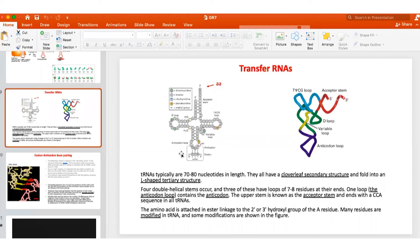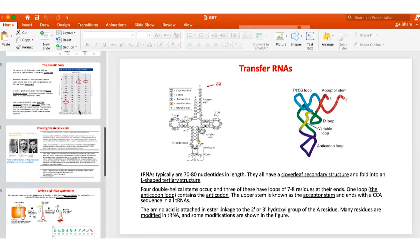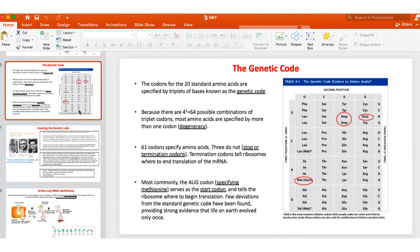A student asks to explain the wobble position and why the third codon is called wobble. The instructor explains this is the reality in the genetic code. For 20 amino acids, we could have done with 20 codons plus one stop and one start, so you probably needed 22 codons minimum. But it turns out evolution has chosen a three-letter code, and if you use a three-letter code you now have 64 instead of 22 possibilities.